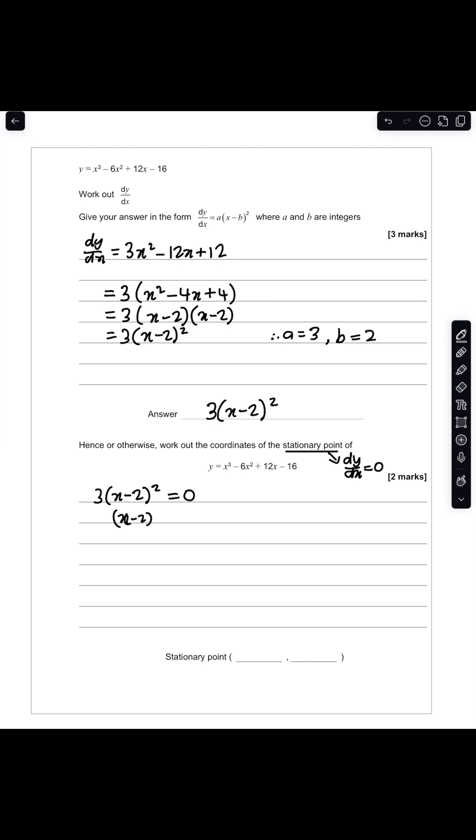Notice if you divide both sides by 3, you have (x - 2)² = 0. So x - 2 = 0. Therefore x = 2. So I know my x coordinate will be 2. And then I can take this value of x and substitute it into my equation for y.